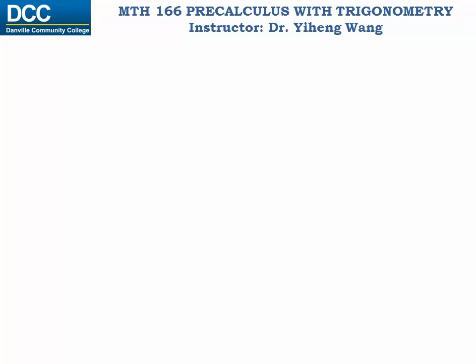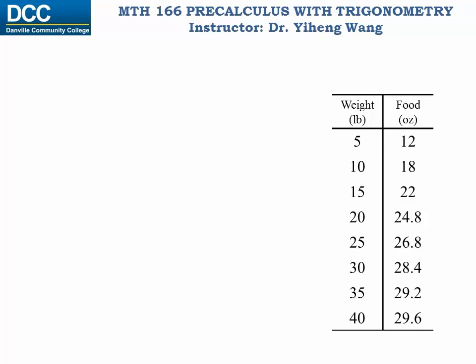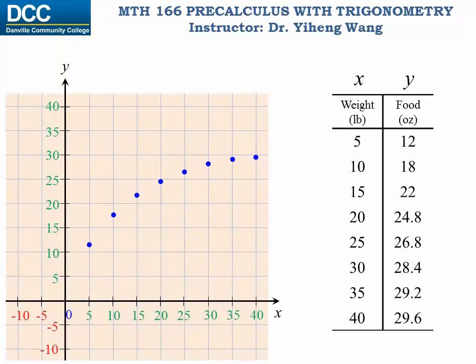Let's imagine an example. I am raising a dog from a puppy into adulthood, and I'm recording his weight and how much food he eats every day, and I put all these data into a table. If I want to further study the relation between these two variables, I can plot the relation. The first column is my x variable, and the second column is my y variable. When I plot them on this Cartesian plane, as we already learned, this can represent a function.